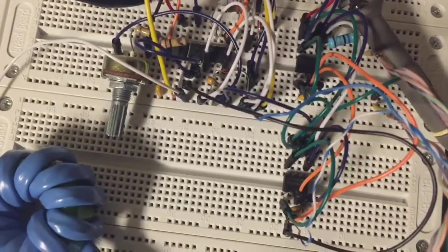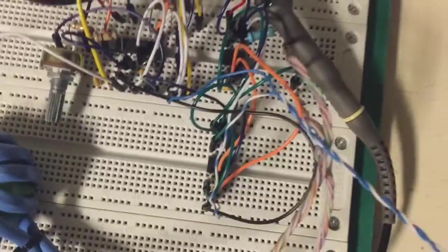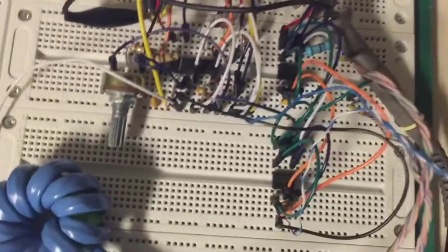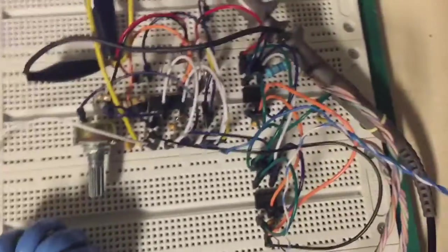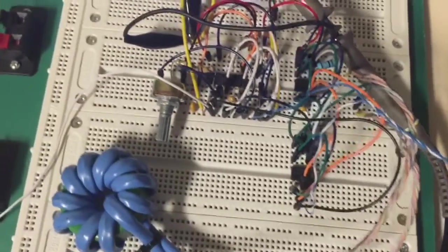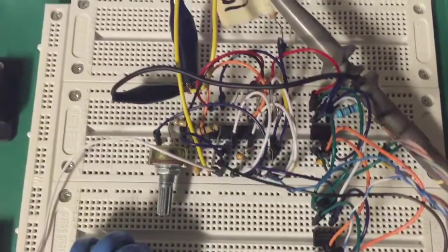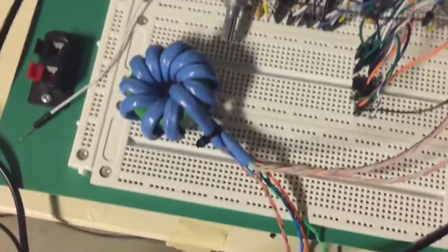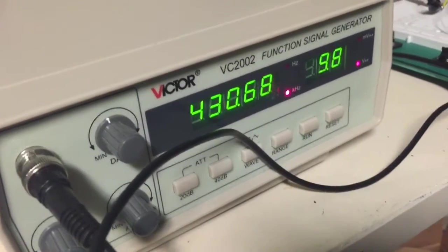I wound this gate drive transformer using cat5 cable. It seems to work well even up to frequencies of up to 1 megahertz. Here I have it running at 430 kilohertz.